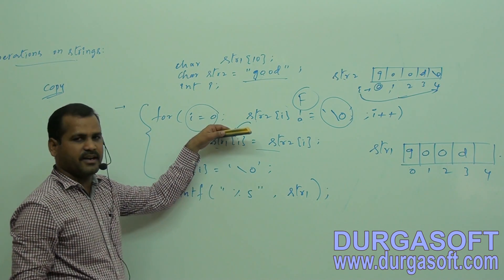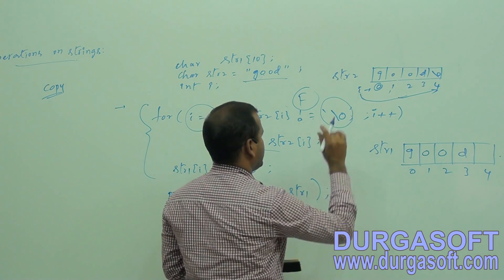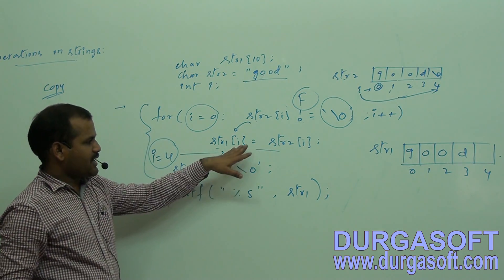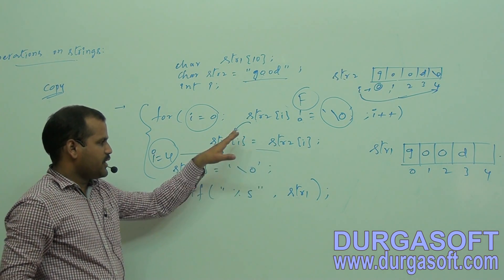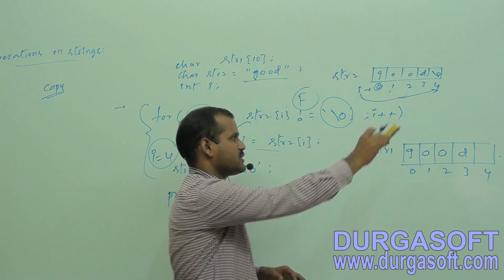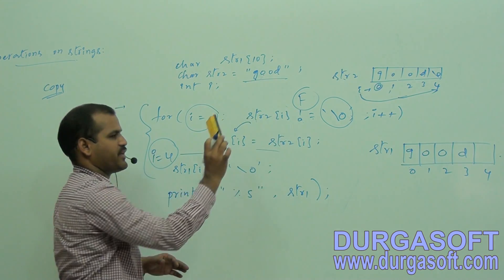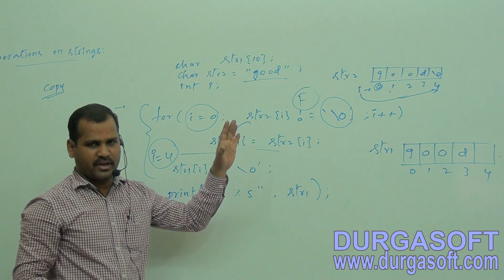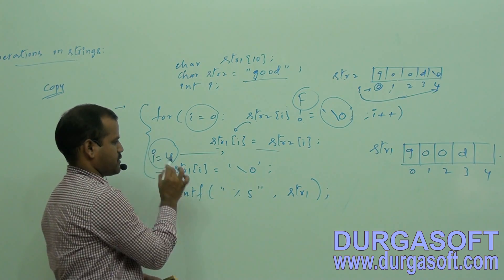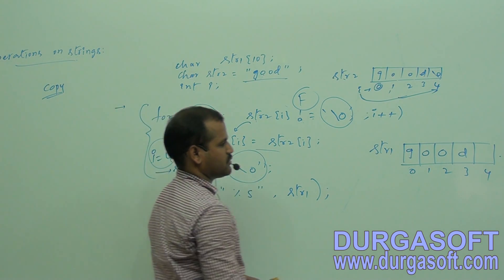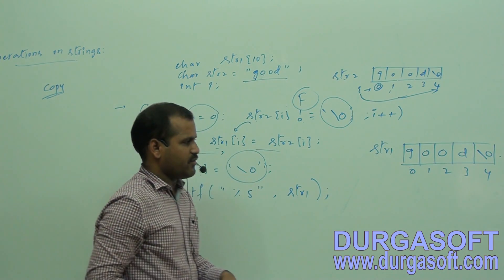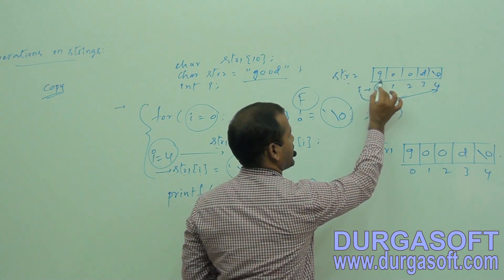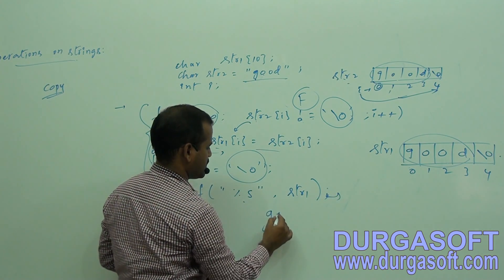When the loop exits, i is 4. Since the condition failed, we are not assigning string2[4] into string1, so the null character is not copied into string1. But as per the definition of a string, we must explicitly supply the null character at the end. So after the loop, we assign string1[i] = null character. With i equal to 4, the null character is explicitly assigned to the end of string1. After execution, string2 is copied into string1 and printed on screen as 'good'.